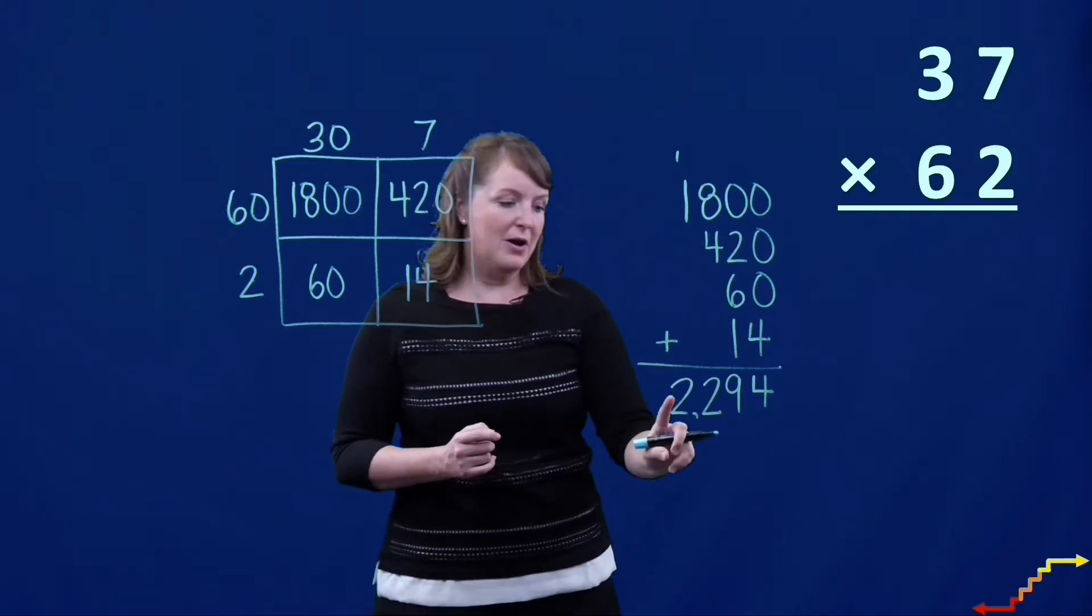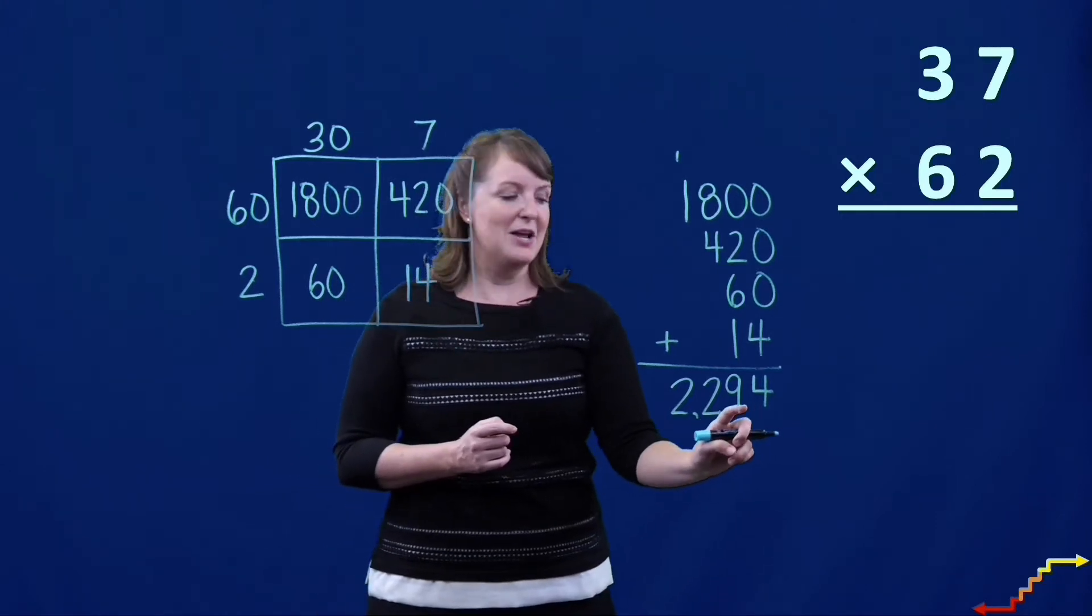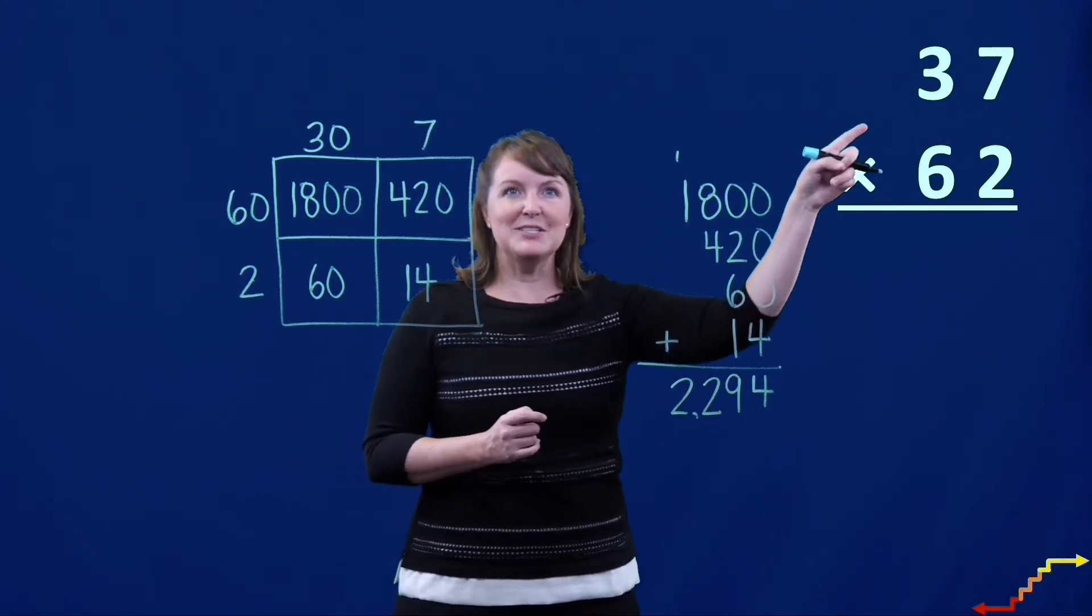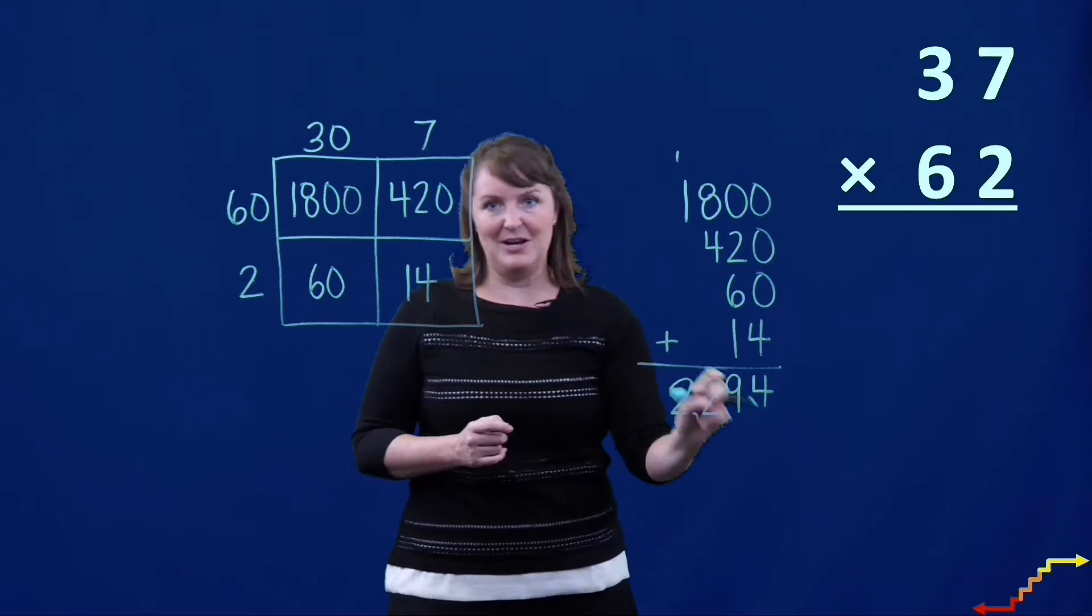And so when we solve our problem, our final product is 2,294. So 37 times 62 is 2,294.